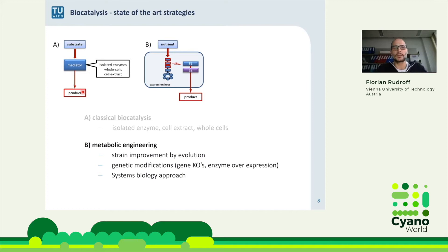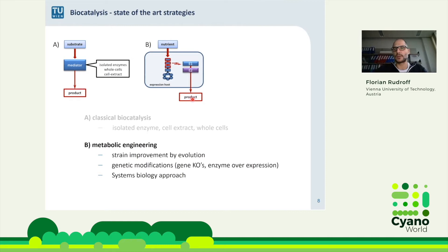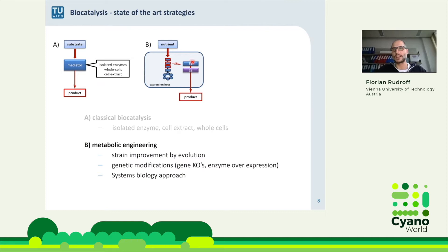Classic biocatalysis uses an enzyme, a cell, whole cells, a cell extract, or an isolated enzyme to convert a substrate to a product in one step. A related field is metabolic engineering, where you modify the cellular metabolic network to reroute nutrients in the direction you want, until you reach your final product. Biocatalysis is more chemistry-driven; metabolic engineering is classically biology- or biochemistry-driven.